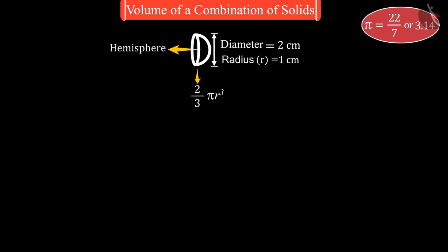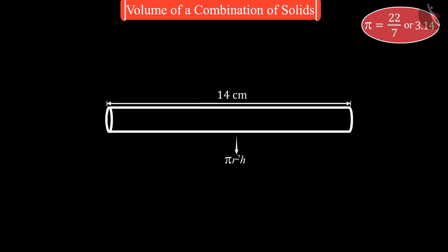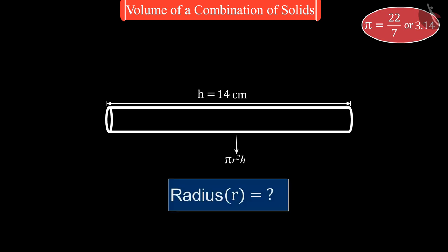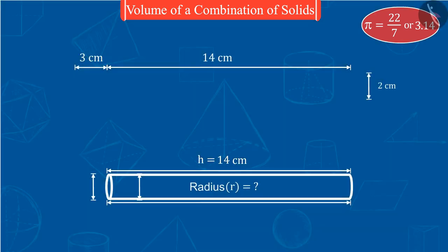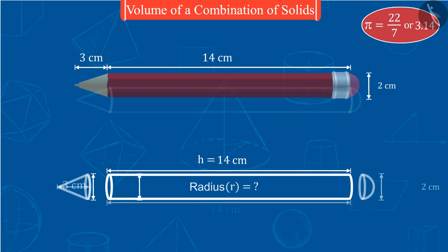Let us now find out the volume of this cylinder in the same manner. Here the height of this cylinder is 14 cm, so the value of h is equal to 14 cm. Can you tell what will be the radius of this cylinder? Here you can see that the radius of these figures is same.